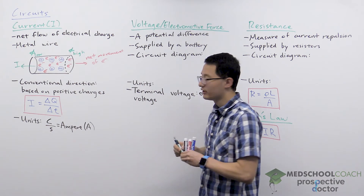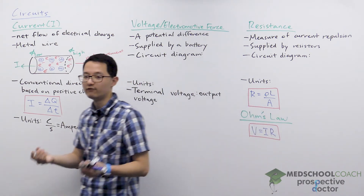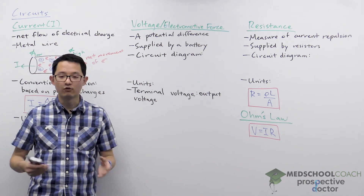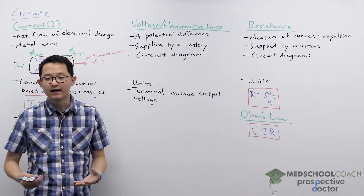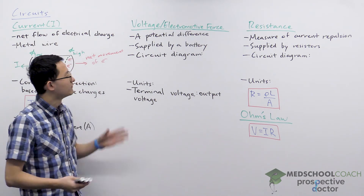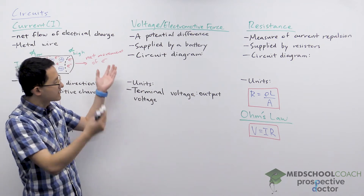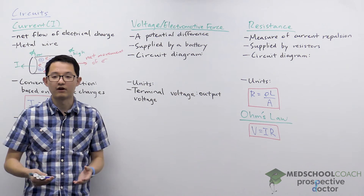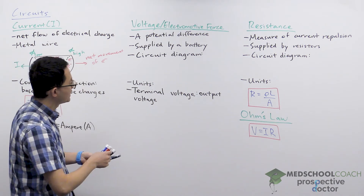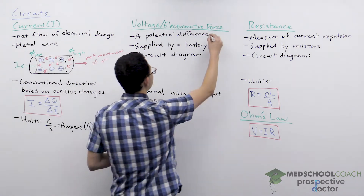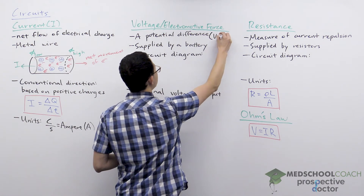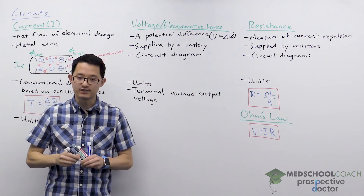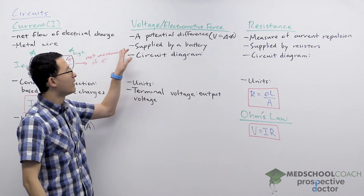So where do we get a potential from? This is where voltage comes in. Voltage is often used synonymously with electromotive force — they're technically not the same thing, but for the MCAT you can treat them as essentially synonymous. Voltage, denoted with capital V, is simply a potential difference: V equals delta phi. And in a circuit, a potential difference is supplied by a battery.